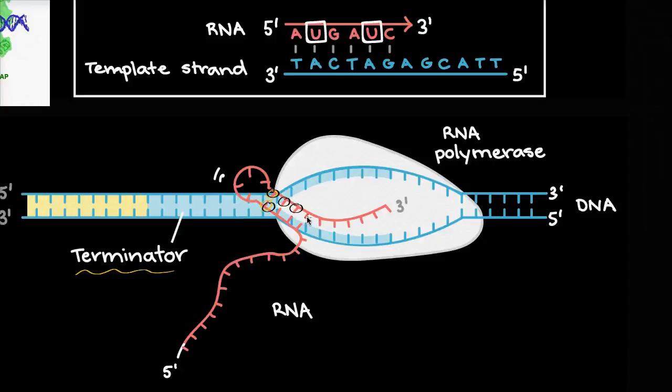And so the complex kind of changes a little bit, and so it lets go, or at least that's how people believe it. There's other forms of how the terminator can act. It might be sequences that parts of the polymerase complex recognize, and it forms a confirmation change, so that the RNA polymerase lets go.